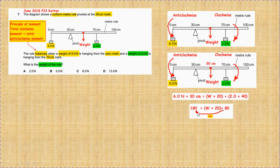How to answer this part? Take the 80 from the right side to the left side by subtraction, changing the sign from plus to negative. So the subtraction: 180 minus 80, which is 100, equals W times 20.